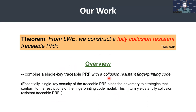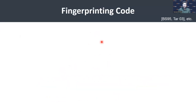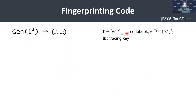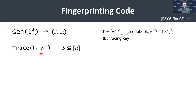Before we proceed, we need to review what a collusion-resistant fingerprinting code is. Fingerprinting codes are information-theoretic objects. The syntax consists of two algorithms. First, the GEN algorithm, which samples a codebook gamma and a tracing key TK. The codewords in the codebook gamma are L-tuples belonging to {0,1}^L, where L is called the code length. There is also the trace algorithm, which takes as input the tracing key and a word W* and outputs S, which should be a subset of the identity space.